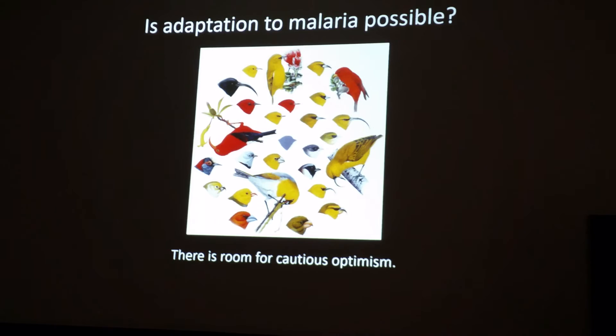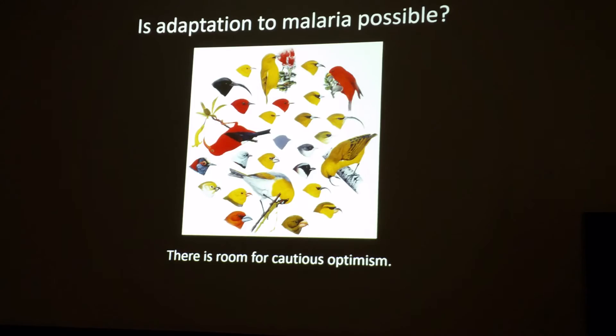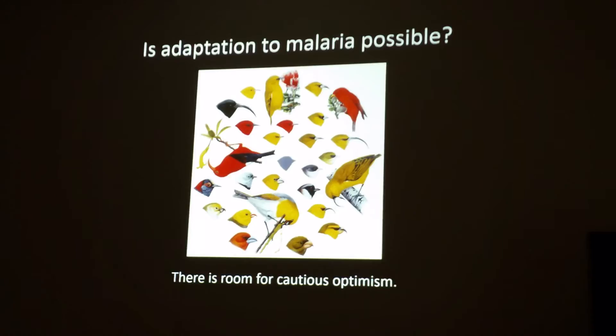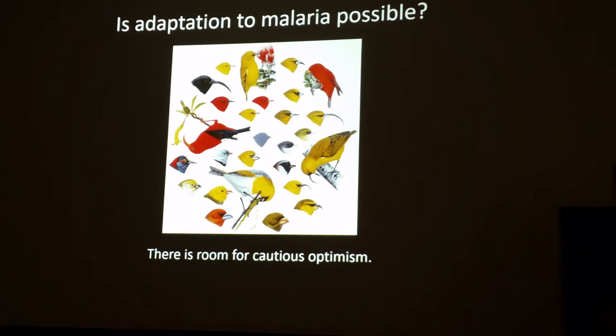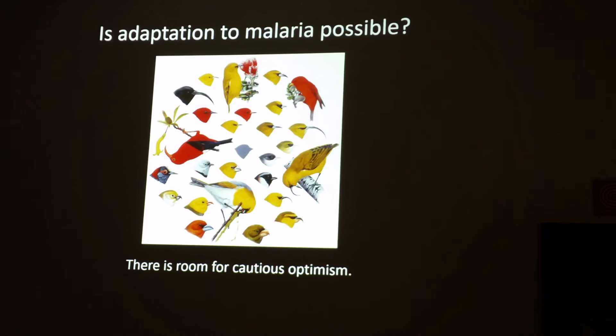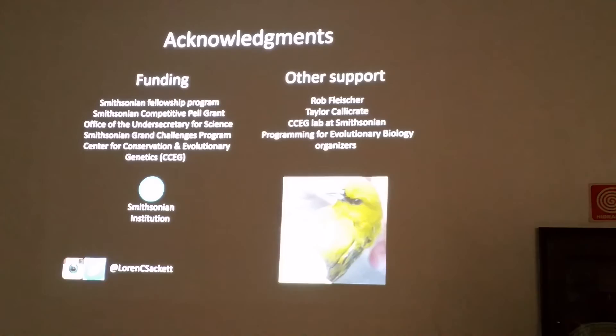Returning to my first question: what we found in the Hawaii Amakihi is that in only 30 generations, this species has been able to evolve and adapt to a really virulent pathogen. Given that these honeycreeper species all radiated from a single ancestor, they likely share a lot of the same genetic diversity. So it may be that we just have to wait a little longer for some of the other species — hopefully not too long. Thank you.